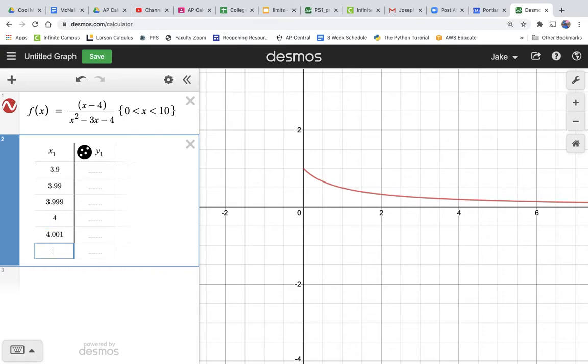Then 4.01, and then 4.1. So we're just getting closer and closer to 4 from both sides.